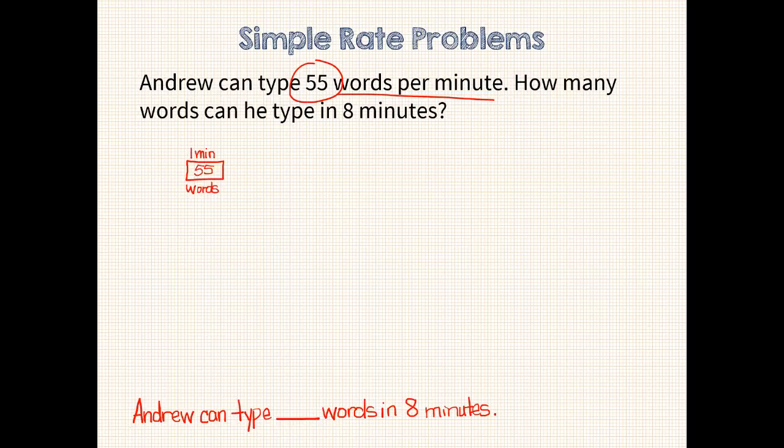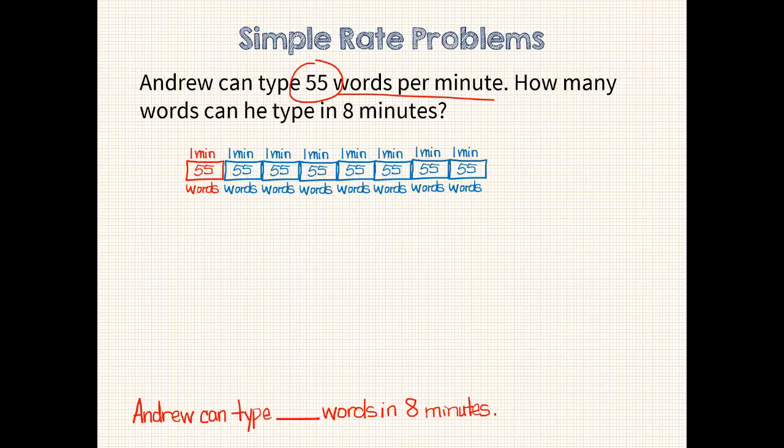Now we want to find out how many words he types in 8 minutes. Well, we already have 1 minute, so let's just add on 7 more minute units. 2, 3, 4, 5, 6, 7, 8. Now it's easy to see how many words Andrew types in 8 minutes because the units are talking, so to speak. We will simply multiply 55 times 8, which is 440. Andrew can type 440 words in 8 minutes.